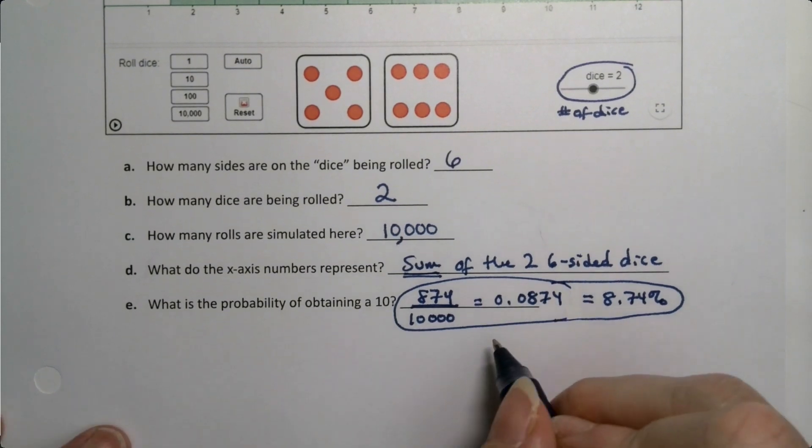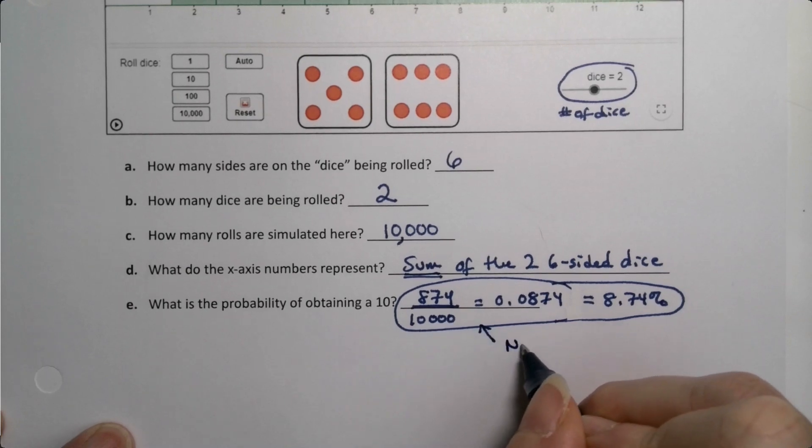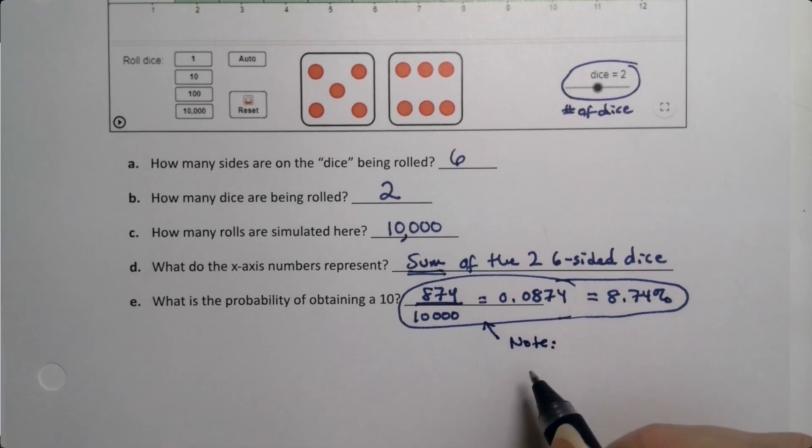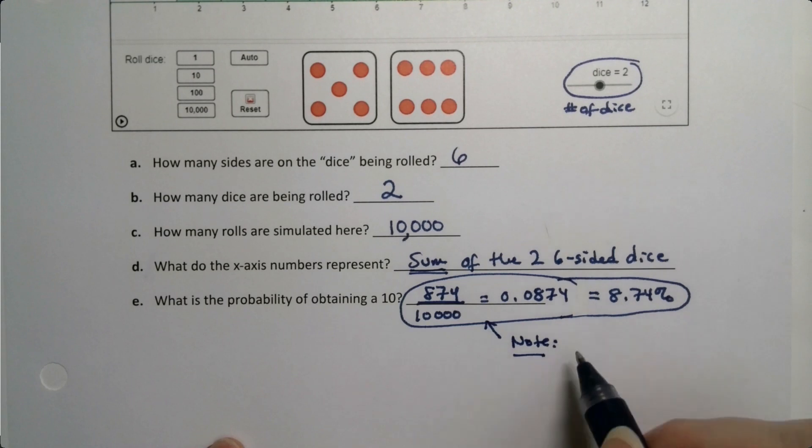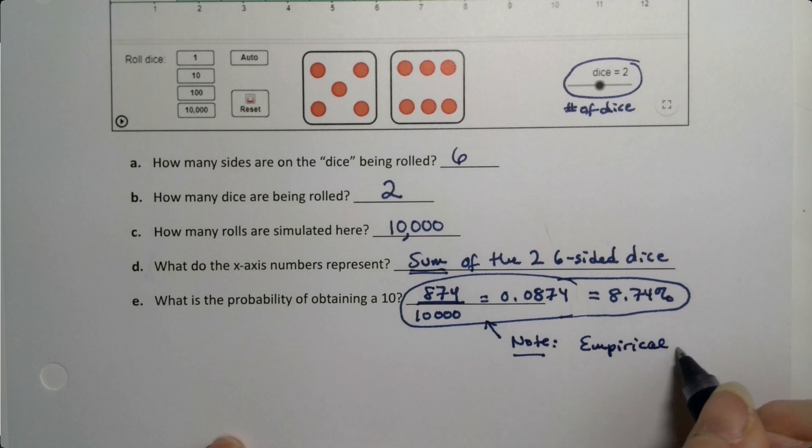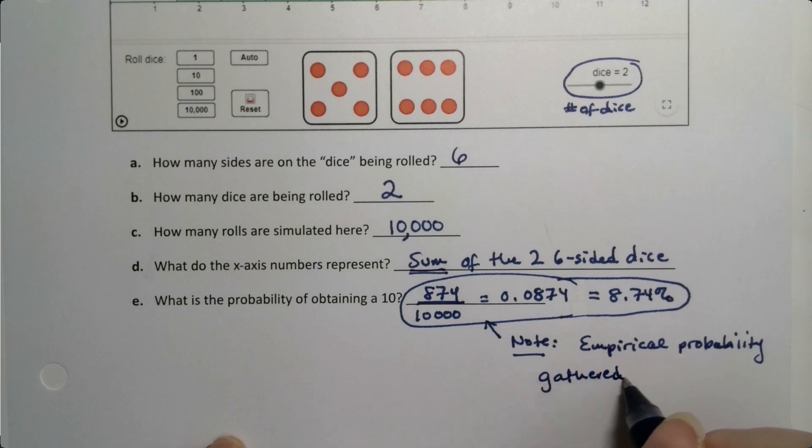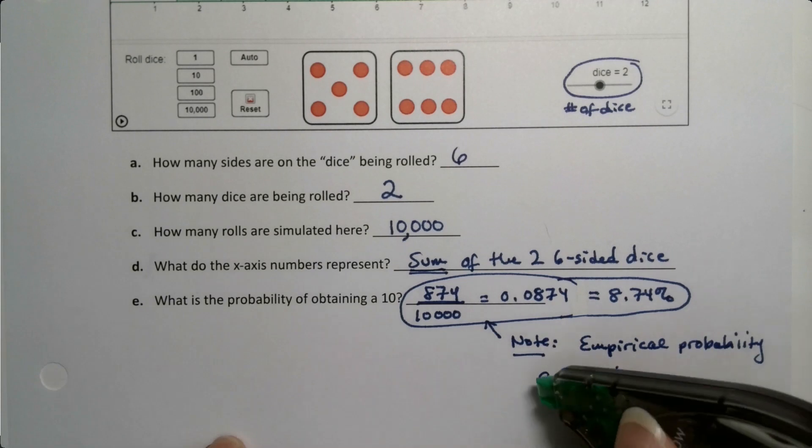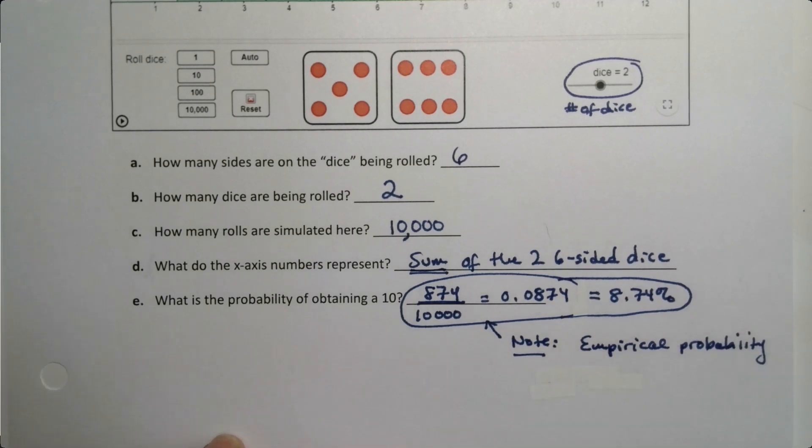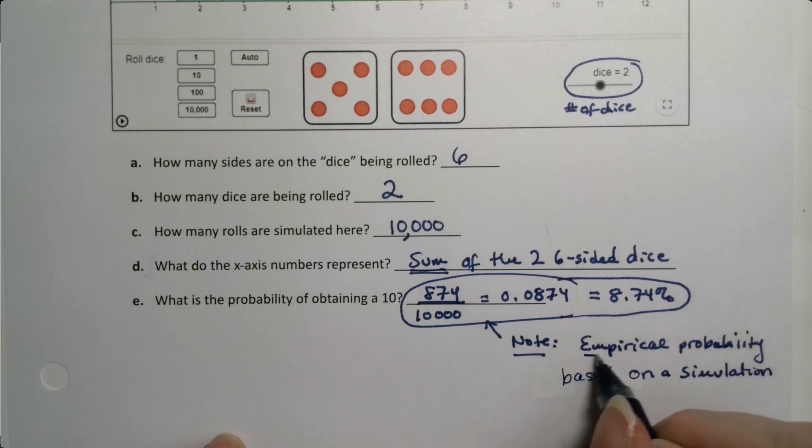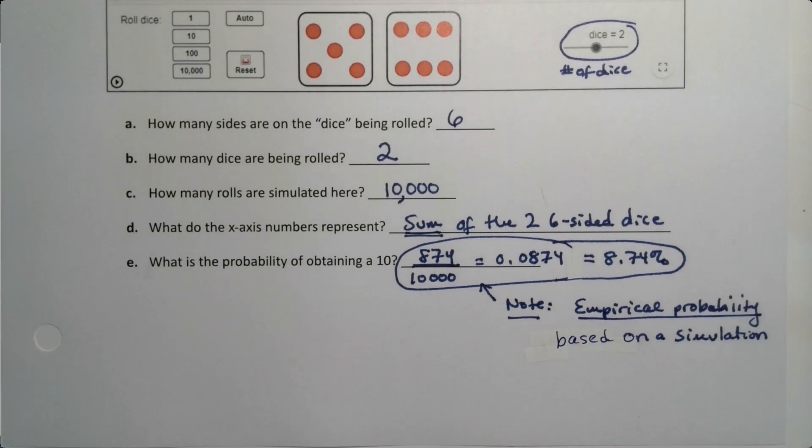Just as a side note, those are empirical probabilities, right? This is an empirical probability. Even though it's from a computer simulation, that's okay. That computer simulation counts as a tracking. This is an empirical probability gathered from simulation, or based on a simulation, I guess I should say. But it is, in fact, an empirical probability for our purposes.